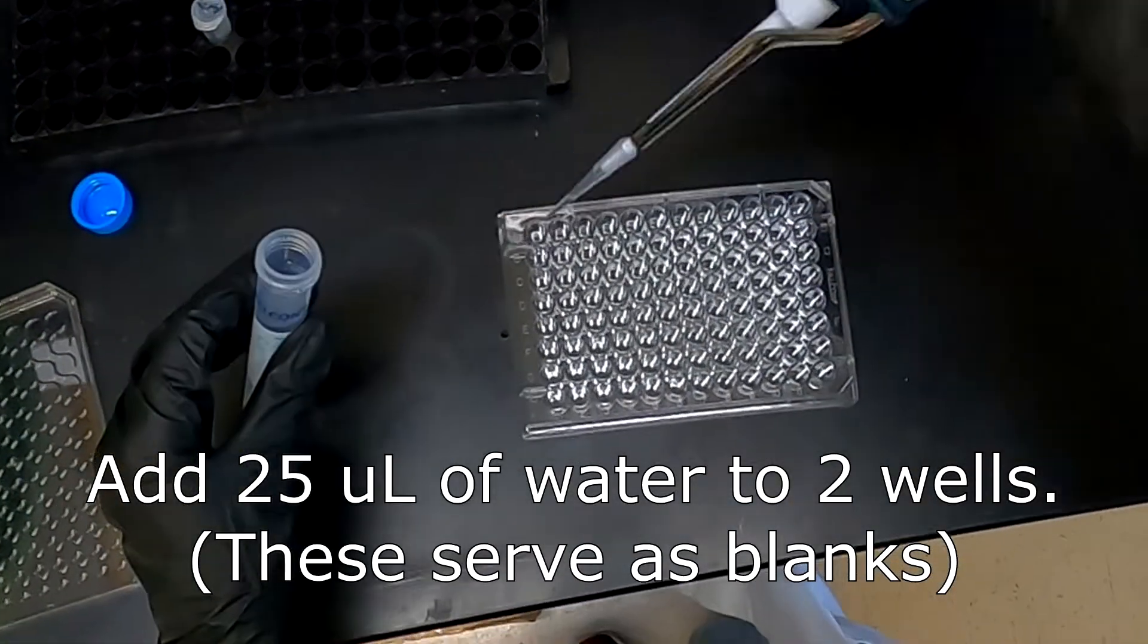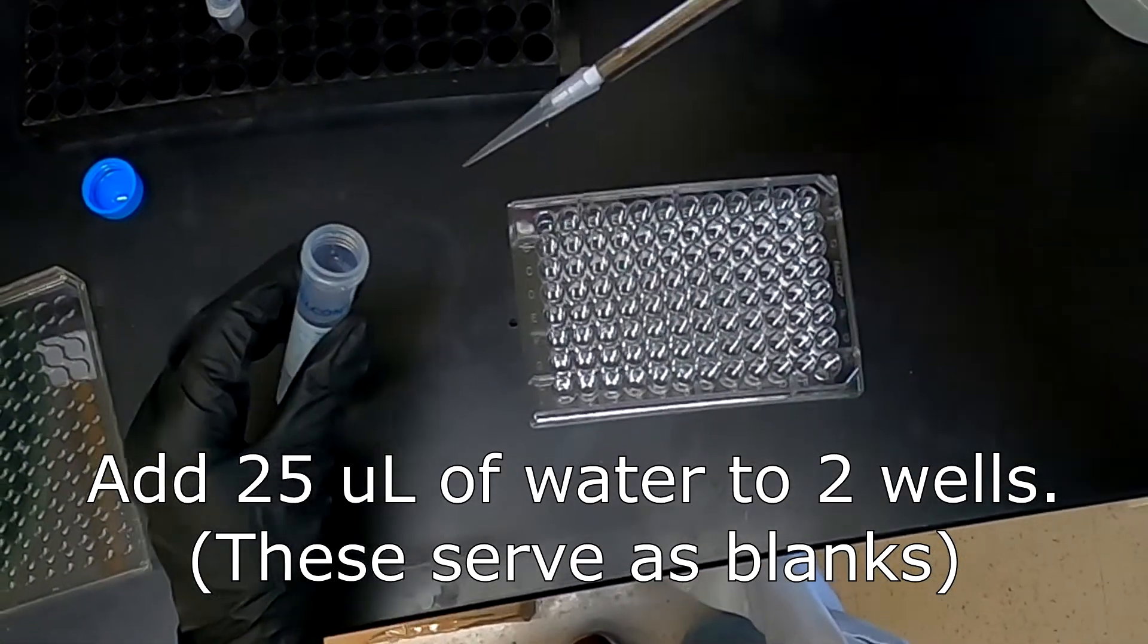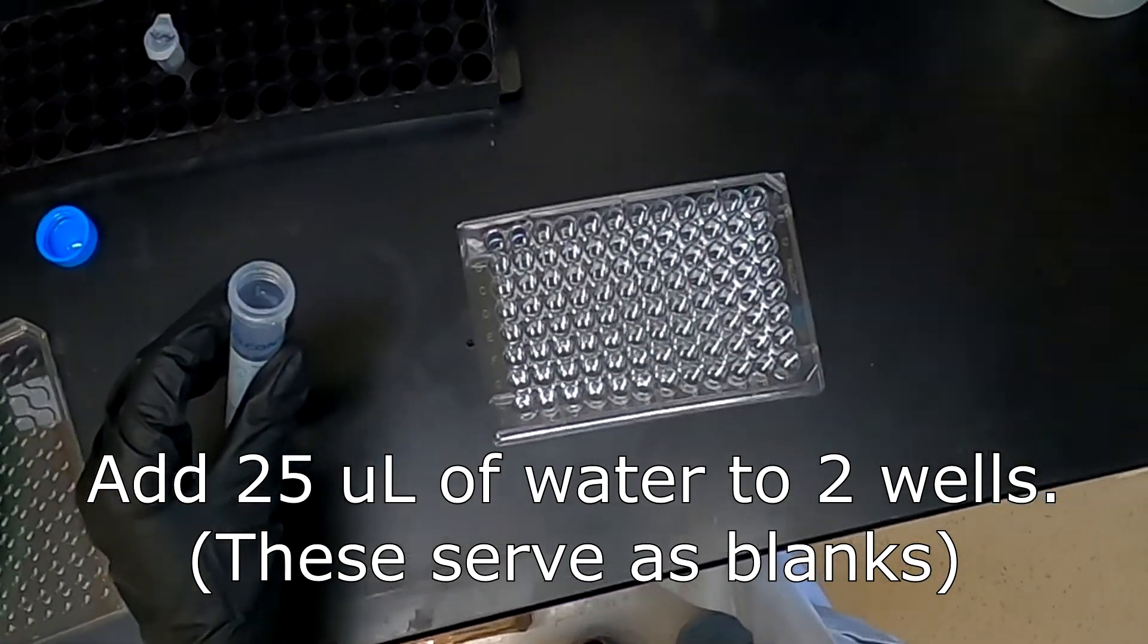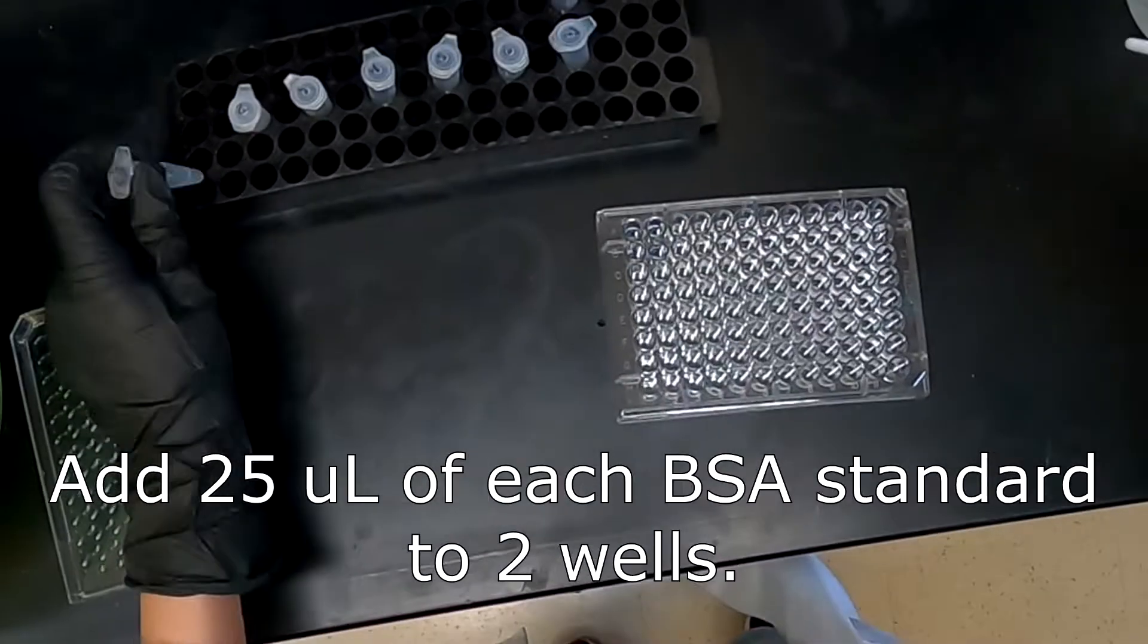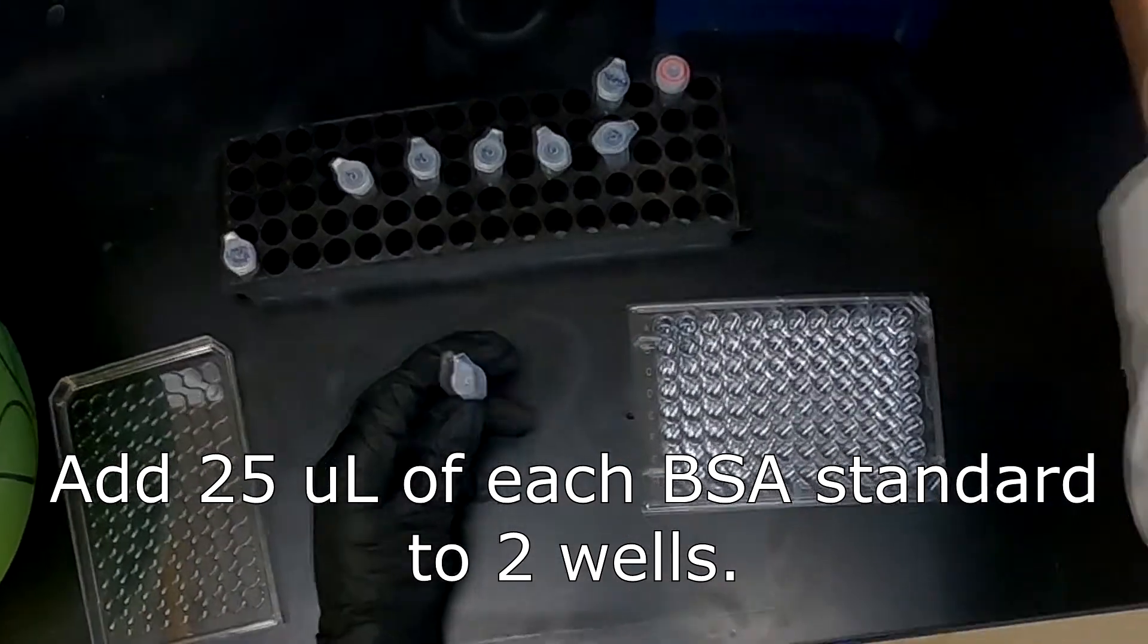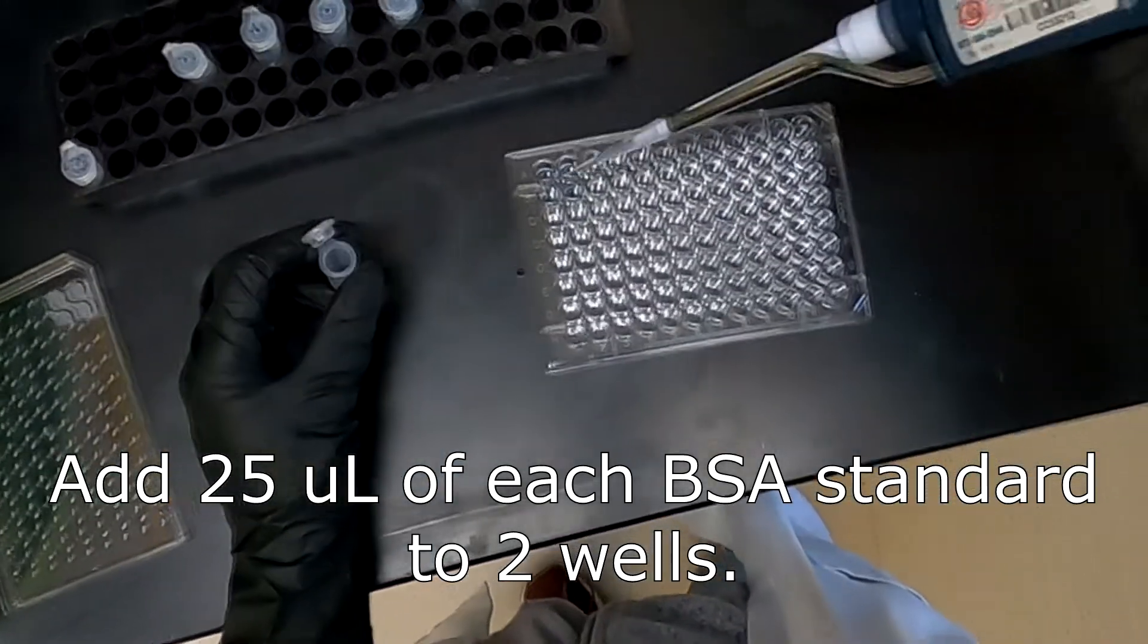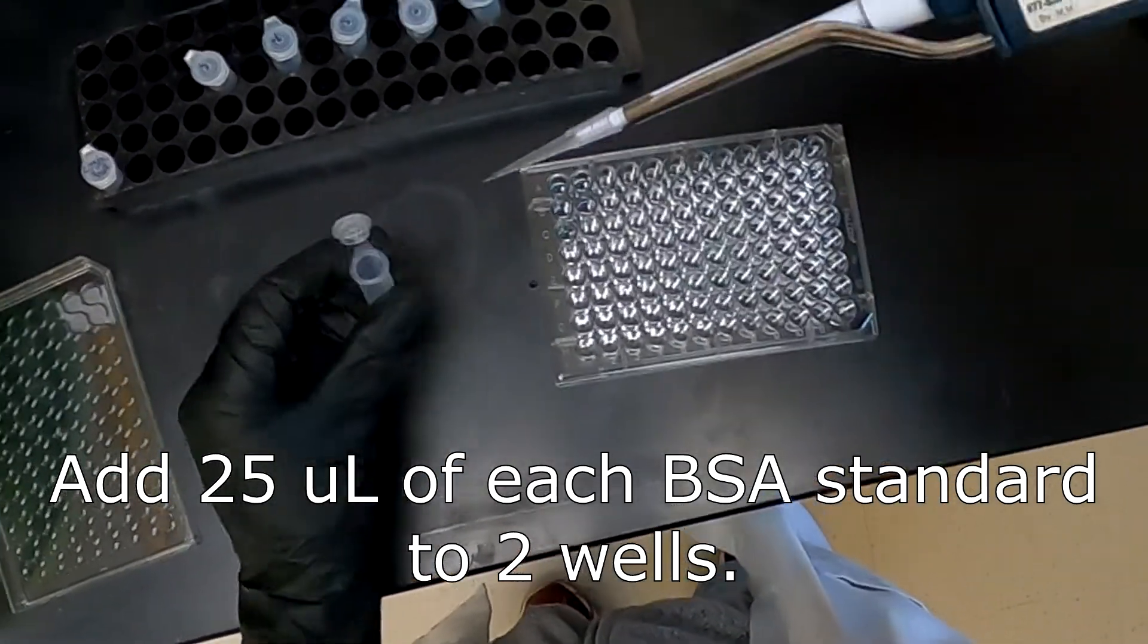25 microliters of water will be placed in duplicate onto the 96 well plate. This serves as a blank for the spectrophotometer. Then 25 microliters of the standards will be added to the 96 well plate, also in duplicates, in order to allow us to average the values.